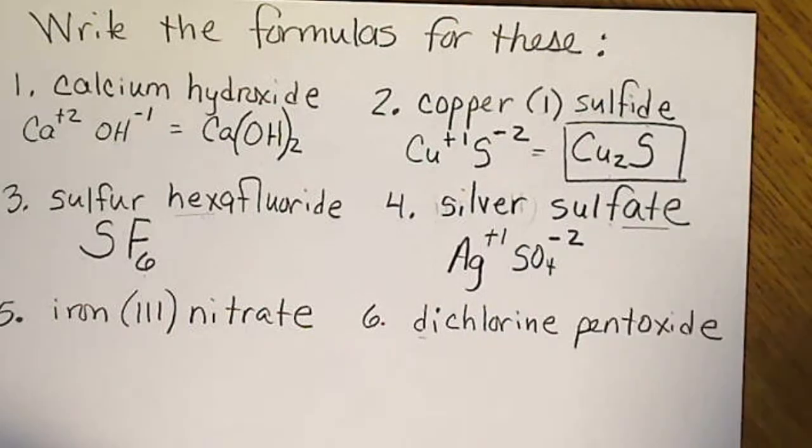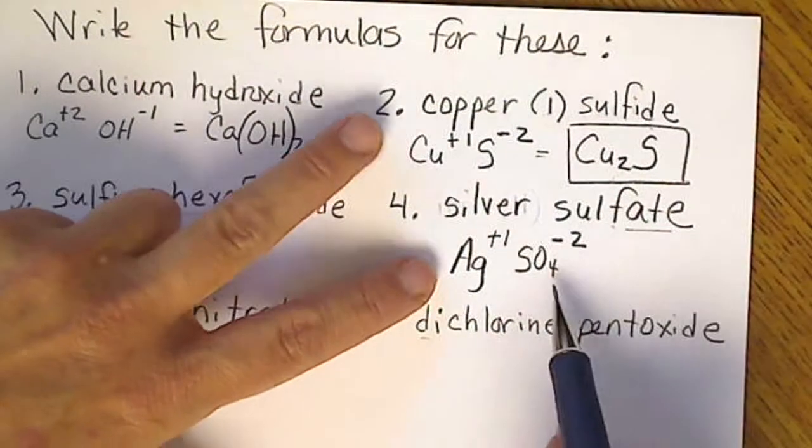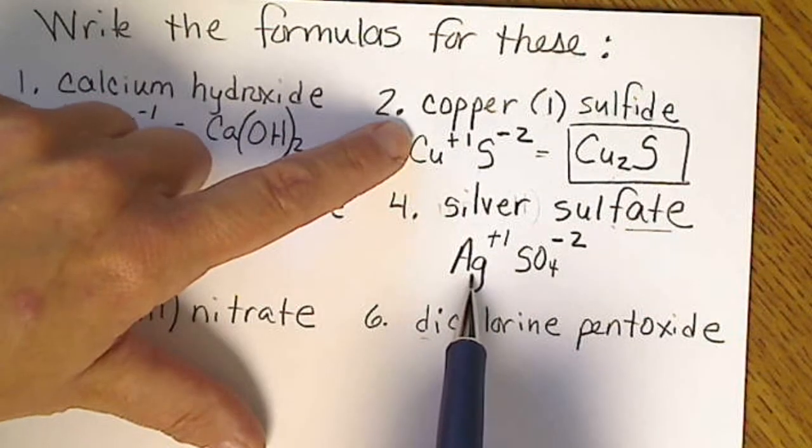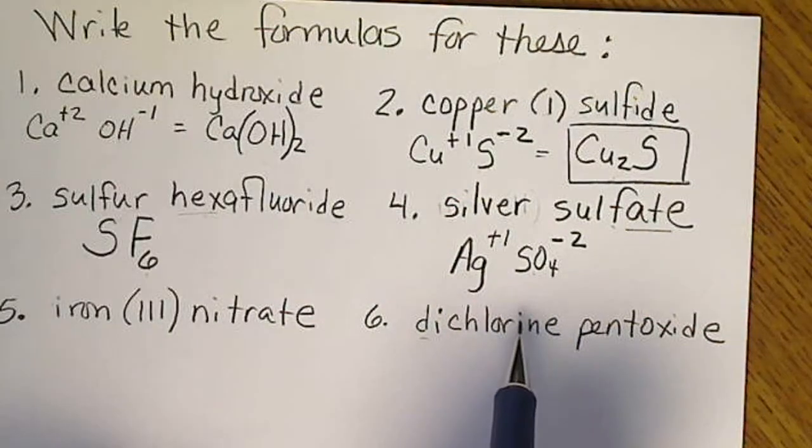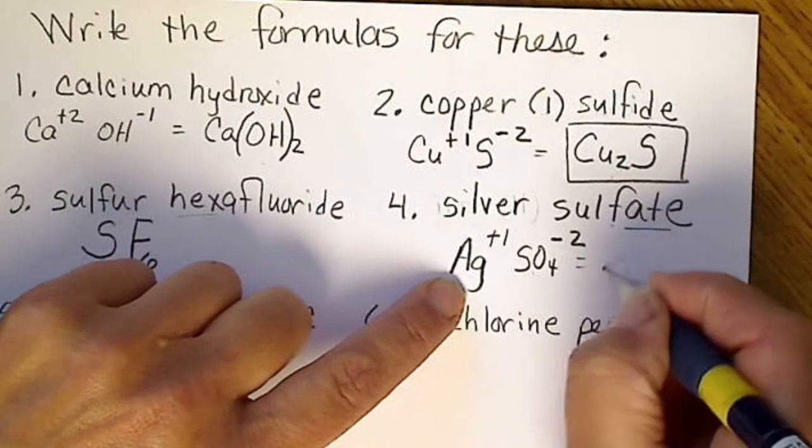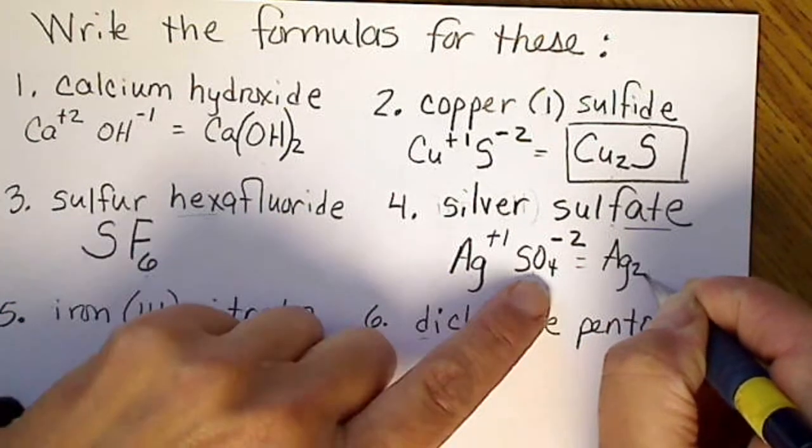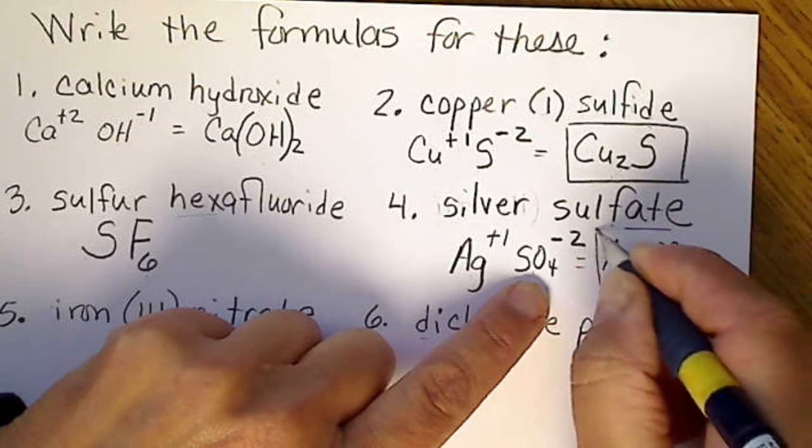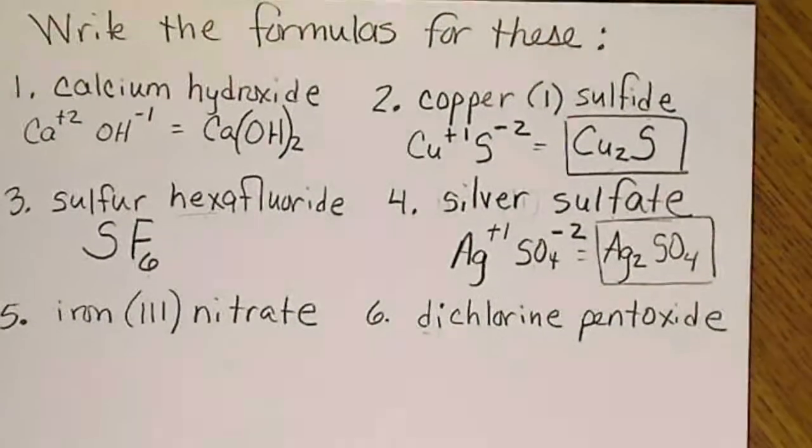It's a charge of -2, so this ratio is just like the ratio above. We have a +1 metal and a -2 nonmetal, so we're going to need two silver atoms for every sulfate. So silver sulfate would look like that.